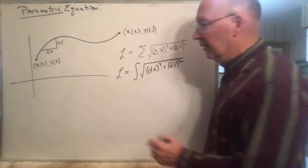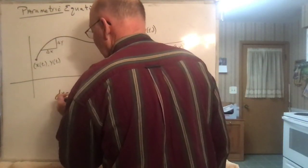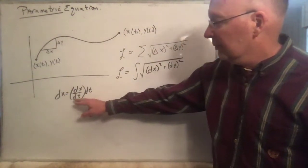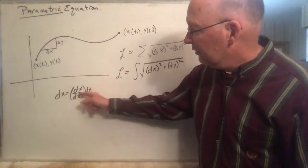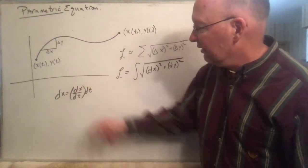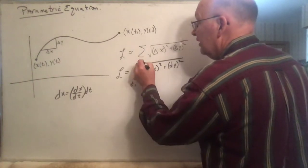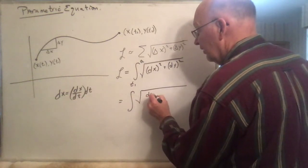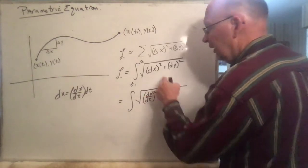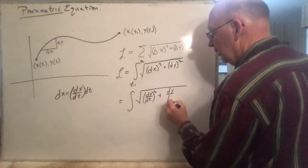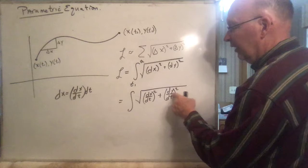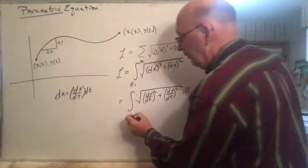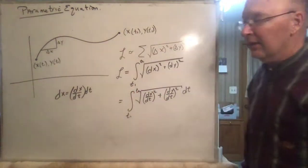The differential dx equals (dx/dt) times dt — that's from Calc 1, where Leibniz's notation comes in handy and the dt's divide out. So this integral from t₁ to t₂ becomes the square root of (dx/dt)² + (dy/dt)², times dt. That's your formula for the length of a curve in parametric equations.